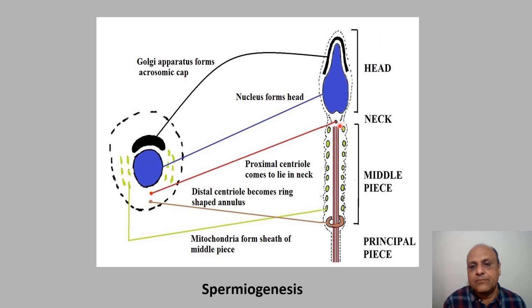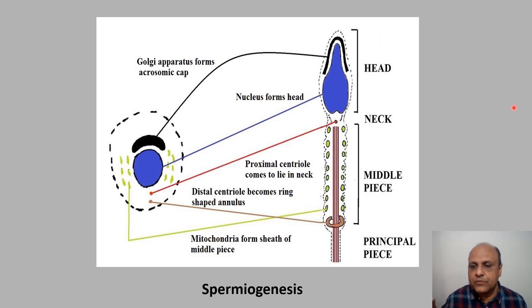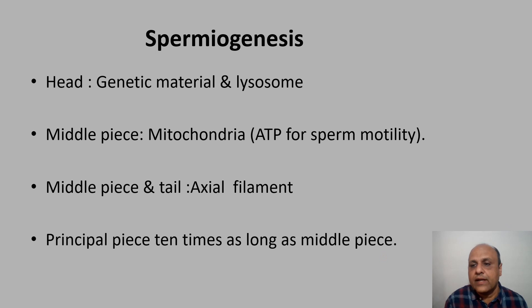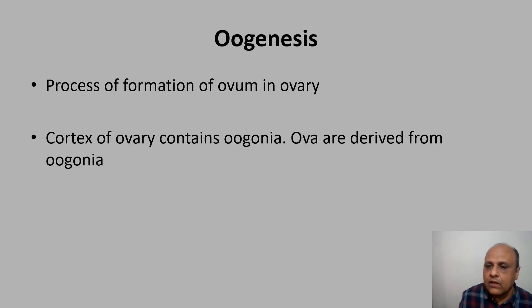The head contains genetic material and a lysosome (acrosome) that digests the egg cell membrane. The middle piece contains mitochondria which provide ATP for sperm motility. The axial filament is present in the middle piece and tail. The tail is about ten times as long as the middle piece.